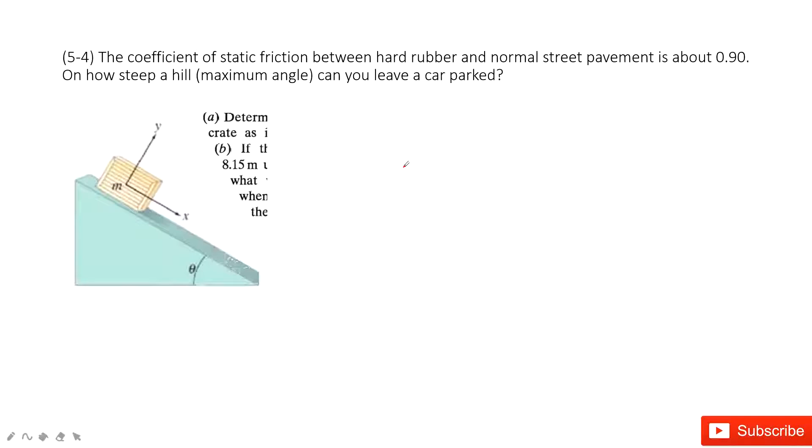In this one, we can see we have a slope or this triangle, and we need to find the angle theta to make sure the car can park on it stationary. So if the car can park on it, that means the car is stationary.